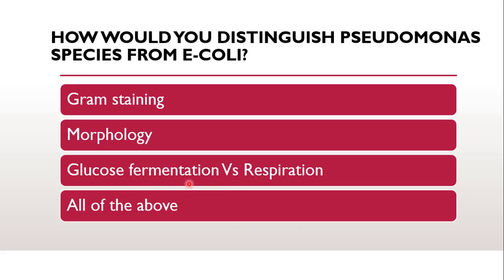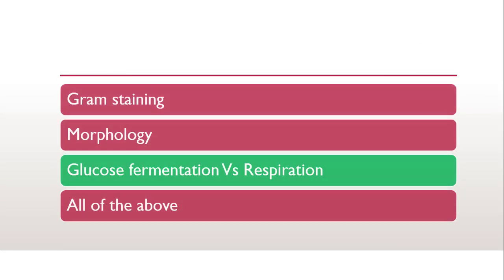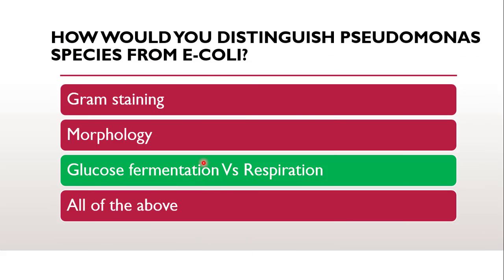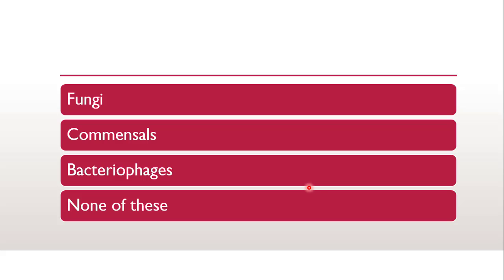Regarding respiration, E. coli makes ATP by aerobic respiration if oxygen is present, but can also carry out metabolic processes even in the absence of oxygen — these are called facultative anaerobes. Whereas Pseudomonas are aerobic species. So the correct answer is glucose fermentation versus respiration is the distinguishing feature between Pseudomonas species and E. coli.